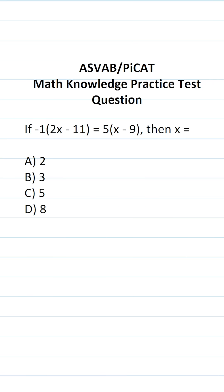This math knowledge practice test question for the ASVAB and PiCAT says, if negative 1 times 2x minus 11 equals 5 times x minus 9, then x equals.